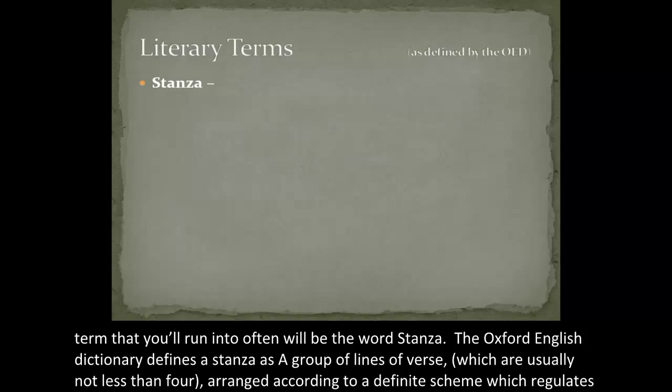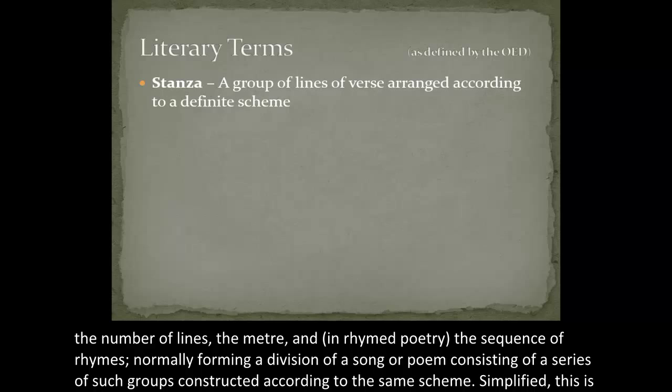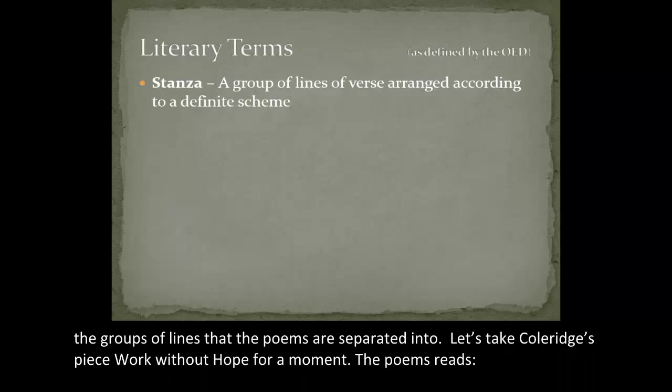The first term that you'll run into often will be the word stanza. The Oxford English Dictionary defines a stanza as a group of lines of verse, usually not less than four, arranged according to a definite scheme which regulates the number of lines, the meter, and in rhymed poetry, the sequence of rhymes, normally forming a division of a song or poem. Simplified, this is just the groups of lines that the poems are separated into.